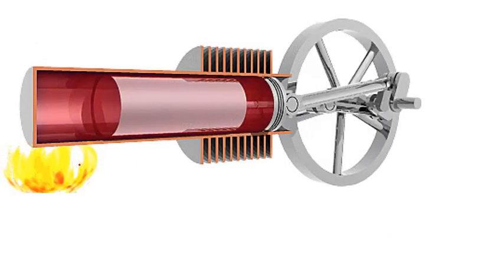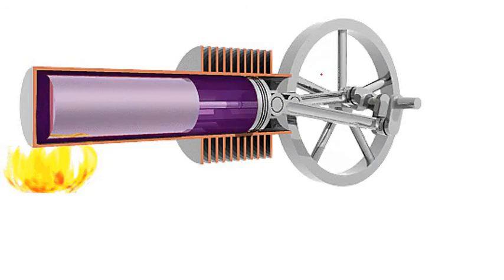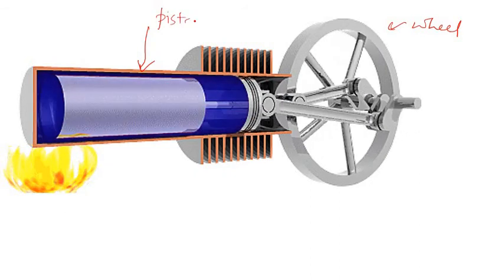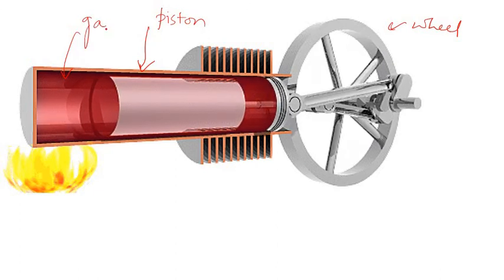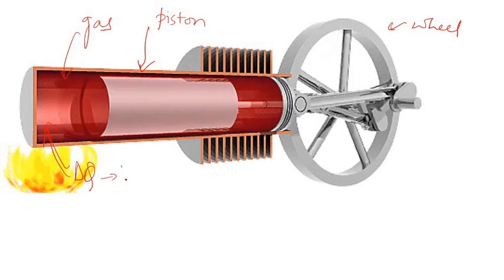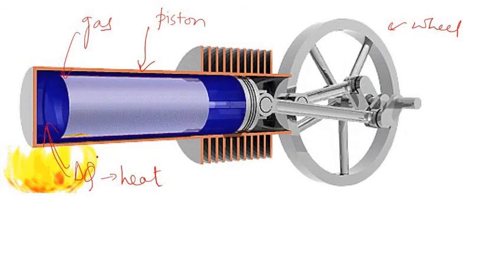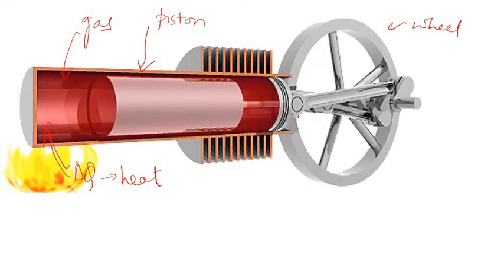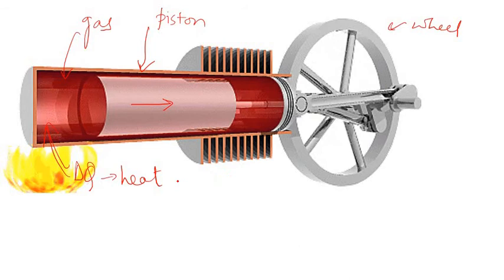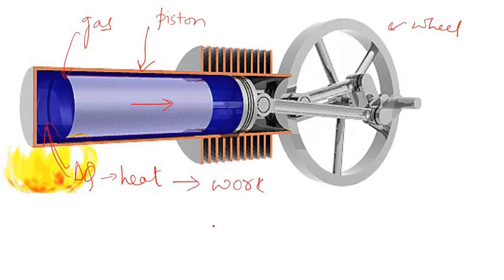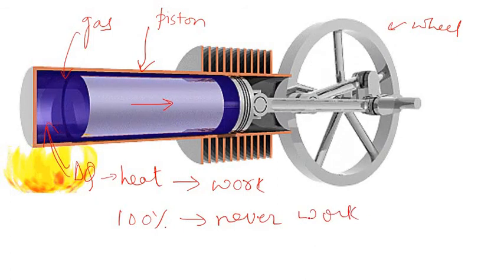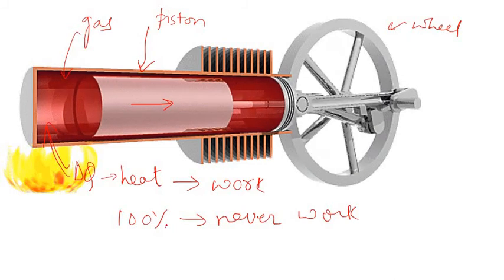We can see that the heat energy which we are giving is used to convert into work or to run the wheel. This is the wheel. This is the piston which is moving up and down, and we are filling a gas inside it. We are continuously supplying heat energy, say for example q, this heat energy or delta q. This heat energy is used to increase the temperature and expansion of the gas. As the gas expands, it pushes the piston in the forward direction and finally the wheel also turns. Here the heat energy is converted into work. But 100% of the heat energy will never convert into work. It is impossible. This is the law of thermodynamics.